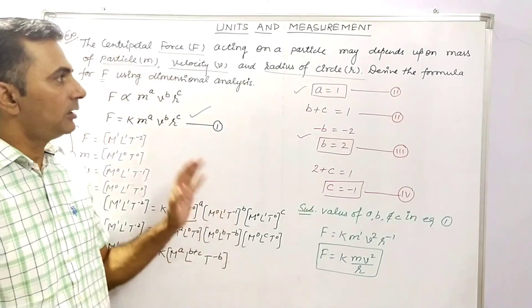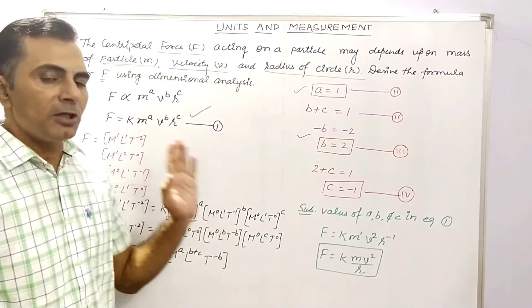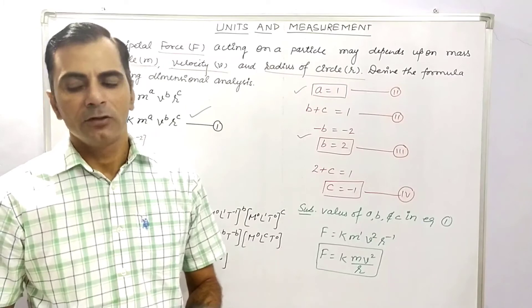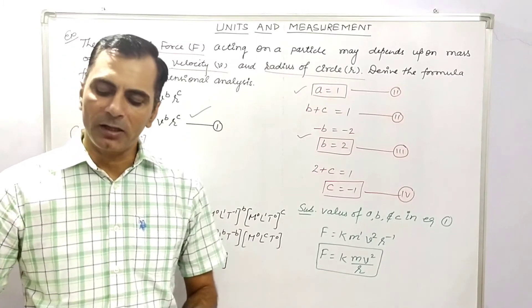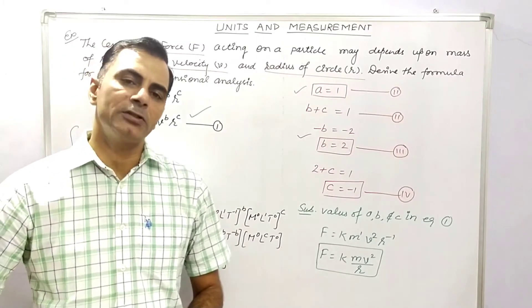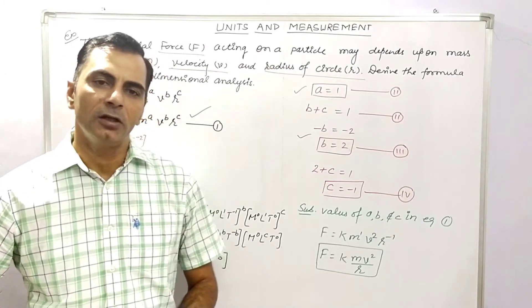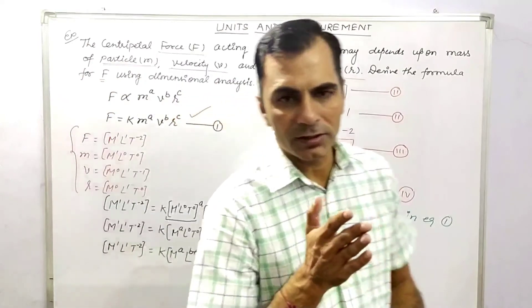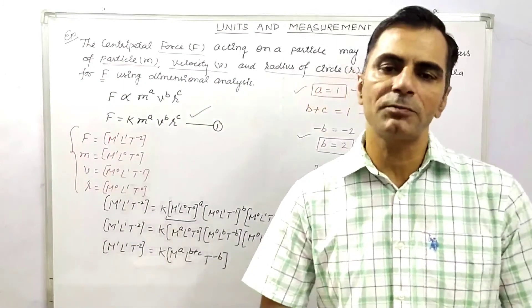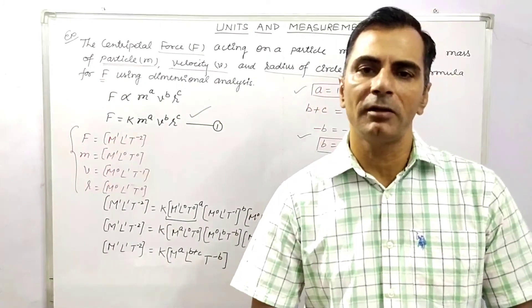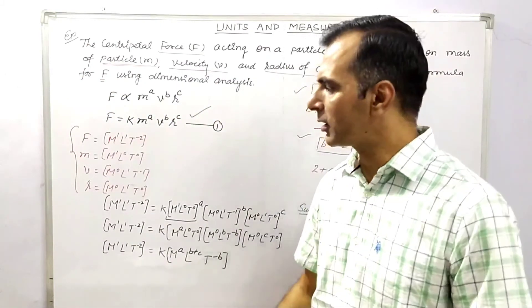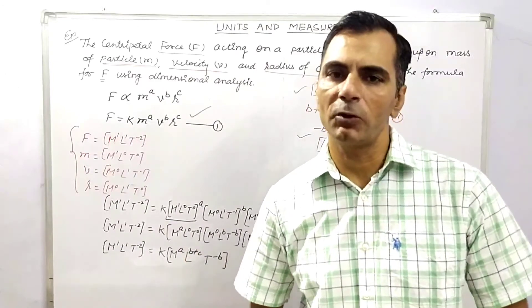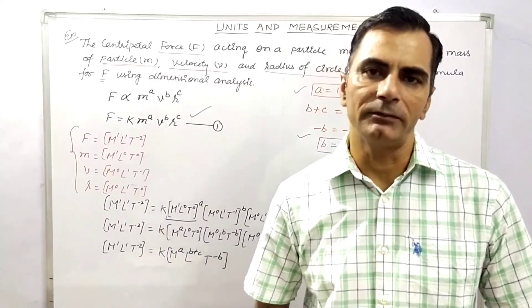This is the third application of dimensional analysis. For any physical quantity given with the quantities it depends on, we assume direct proportionality with unknown powers, substitute dimensional formulas, equate powers using the principle of homogeneity, solve for the unknown powers, and substitute back to get the formula.